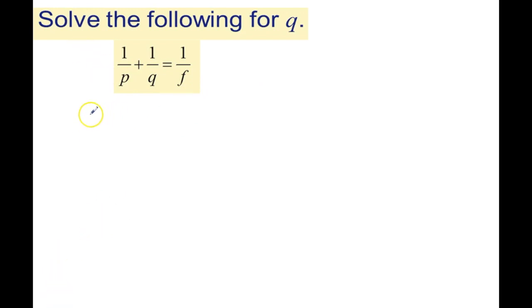So what I'm going to do now is rework this problem the correct way. And we'll start it the same way. We'll get Q by itself on the left side. 1 over Q equals 1 over F minus 1 over P.